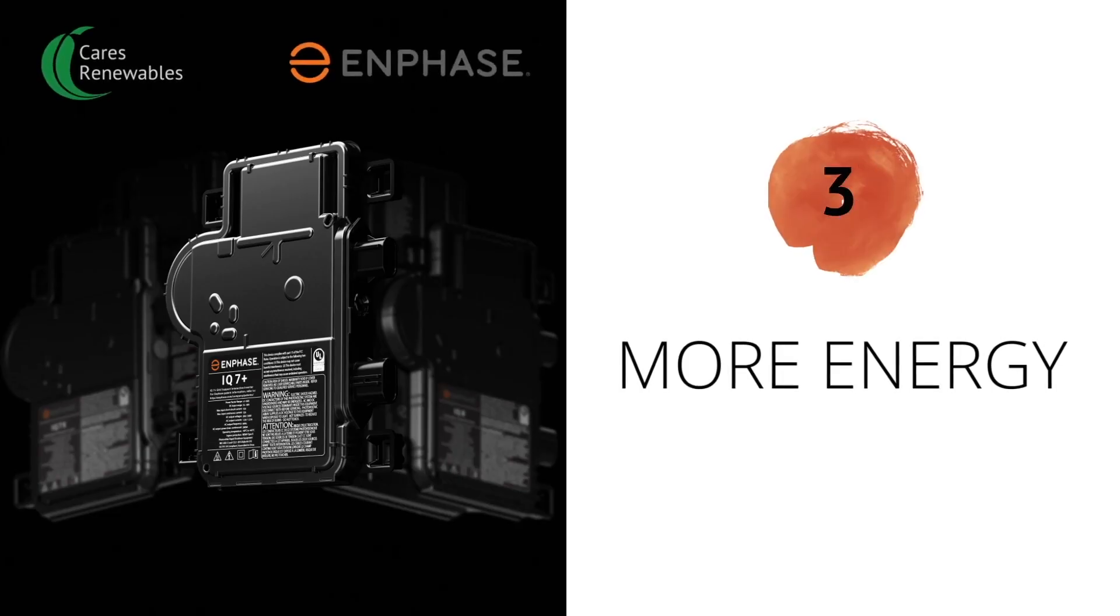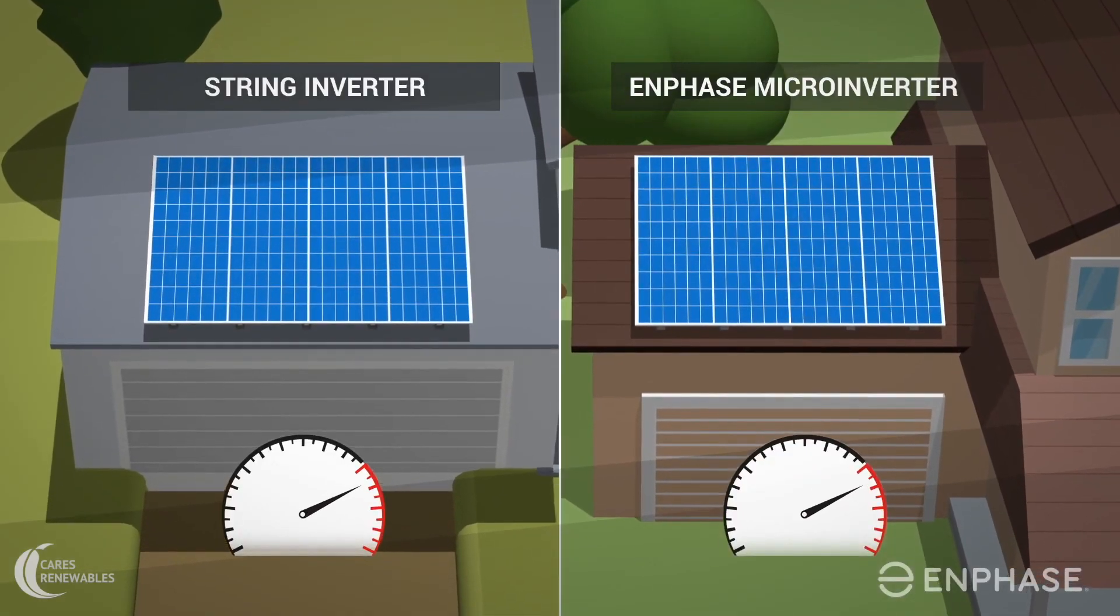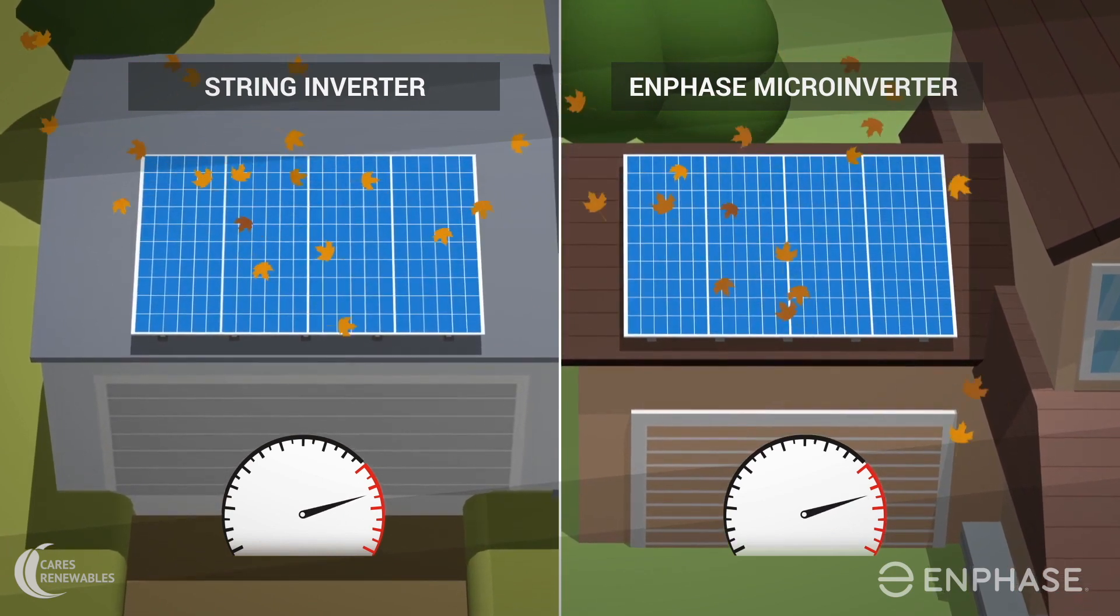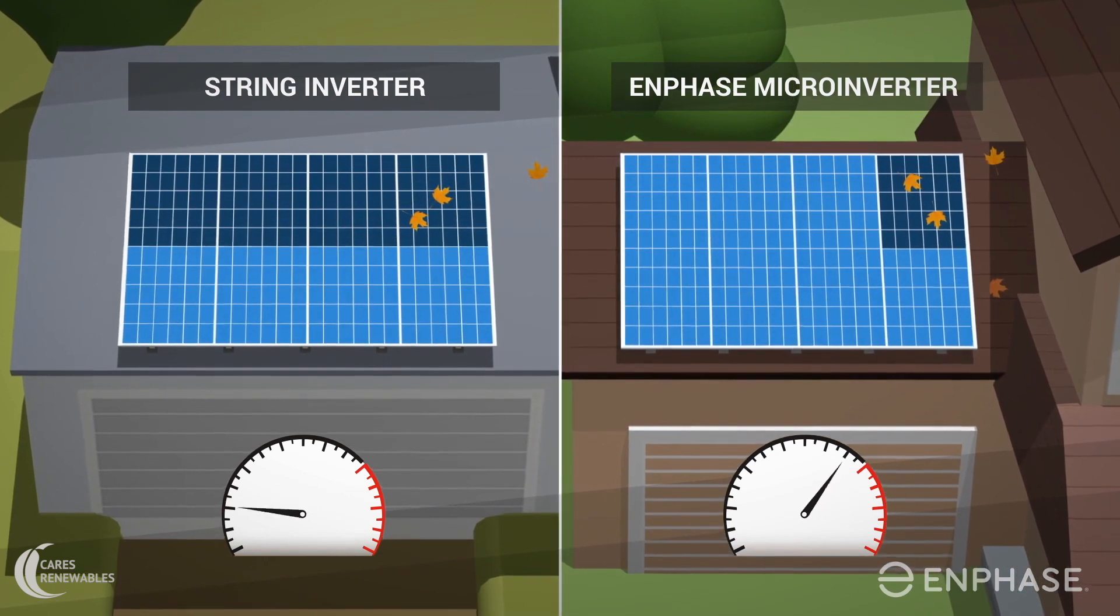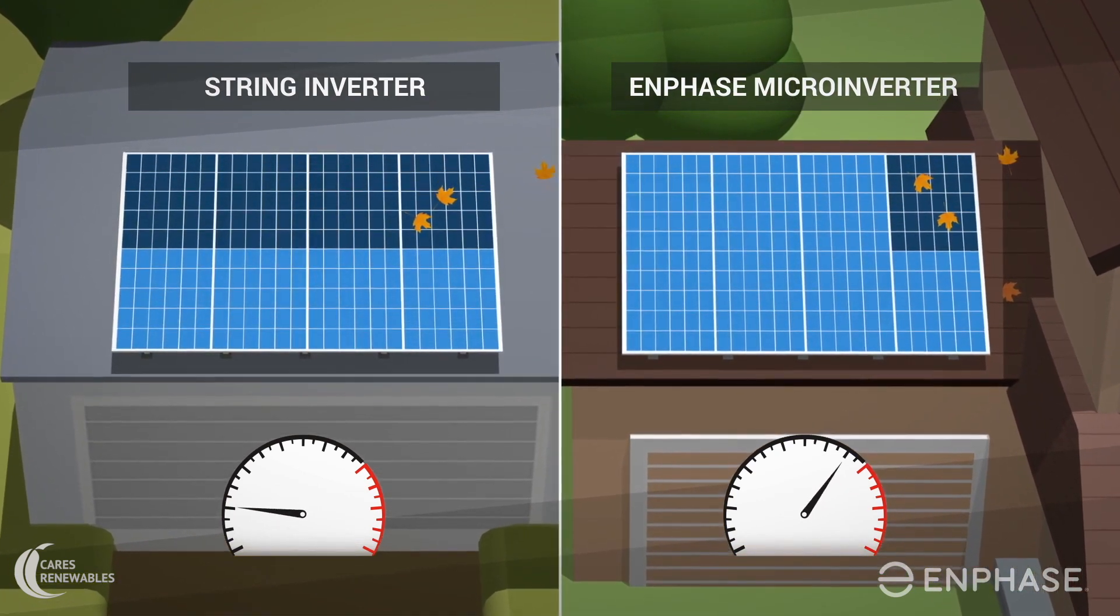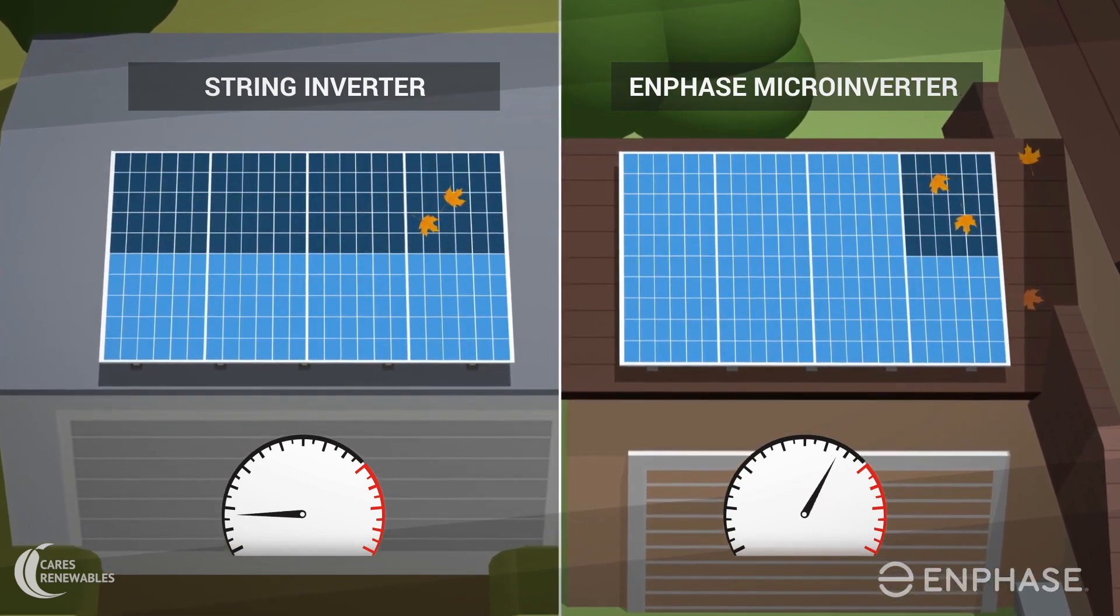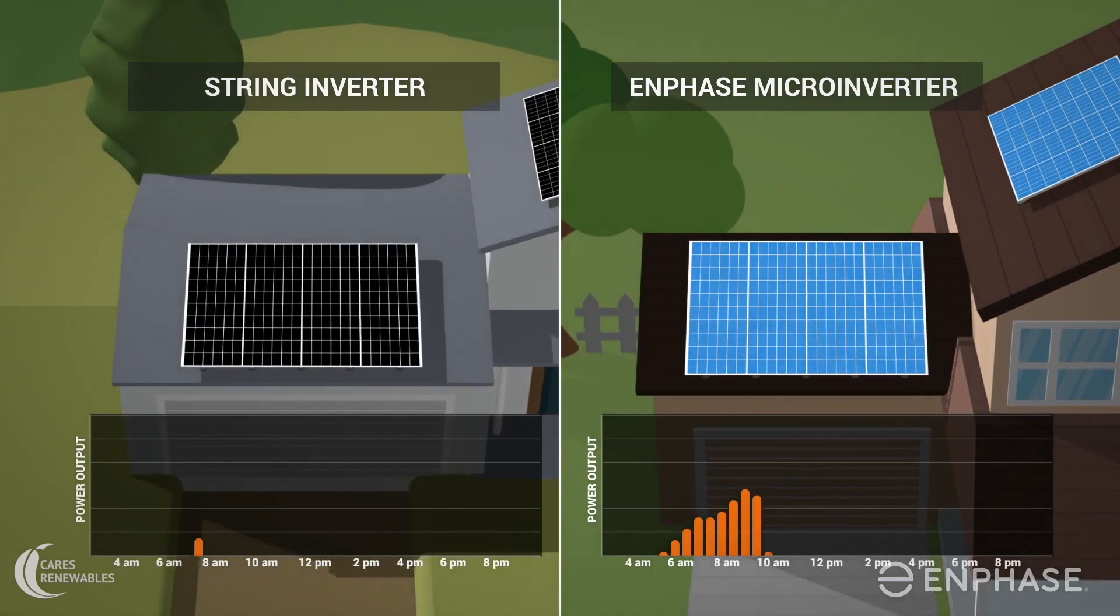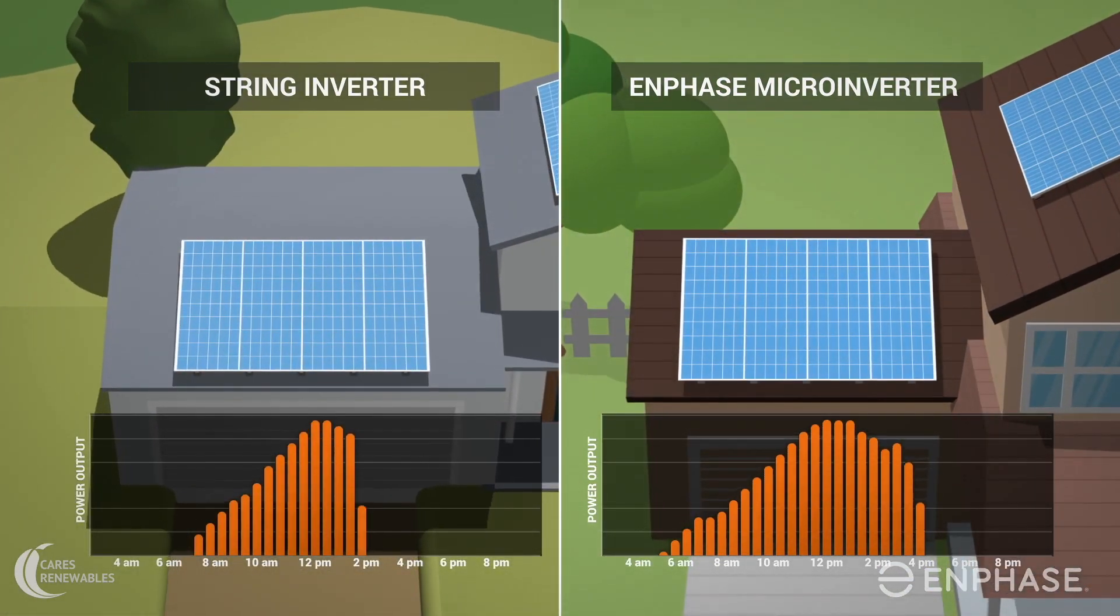Enphase microinverters can produce up to 25% more energy over lifetime of the solar plant. In a traditional string inverter system, the least performing module limits the solar plant's performance. Microinverters by design extract maximum energy from each solar module. Moreover, the burst mode in Enphase inverter enables maximum power extraction during low-light conditions such as sunrise, sunset, and overcast conditions.